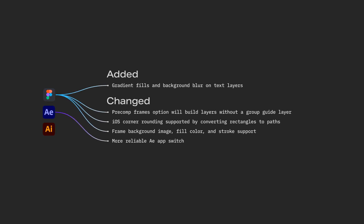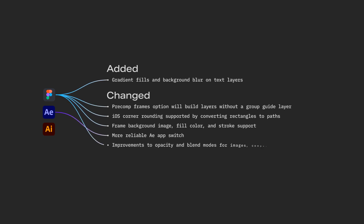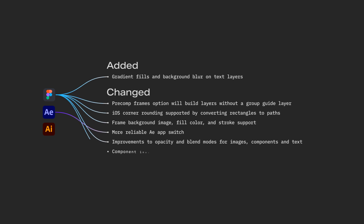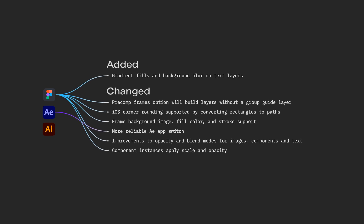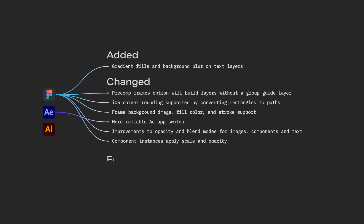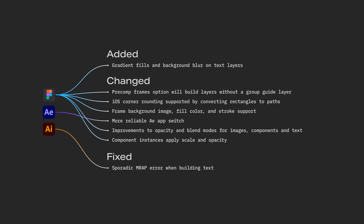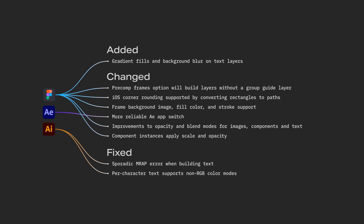The After Effects app switch has become more reliable on transfers. Opacity and blend modes for images, components, and text has been improved. Component instances now apply scale and opacity on transfers. A sporadic MRAP error when building text from Illustrator has been fixed. And per character text now supports non-RGB color modes from Illustrator.